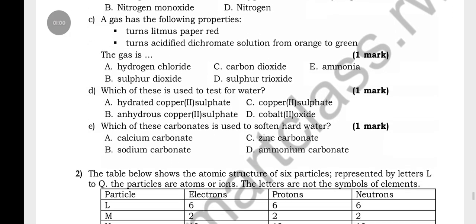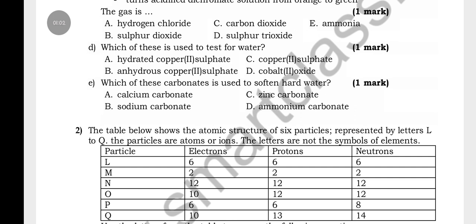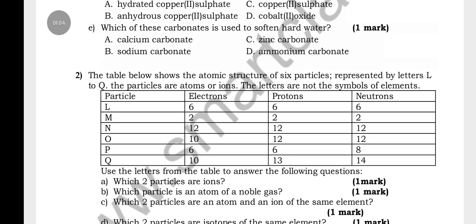Here are questions in Section A. There are multiple questions from part one up to E. Number two discusses atomic structure: six particles presented by the letters A to Q, and these particles are atoms or ions, and the letters are not the symbols of elements.